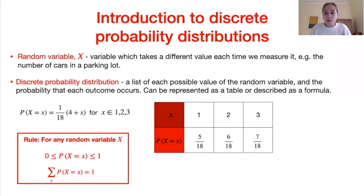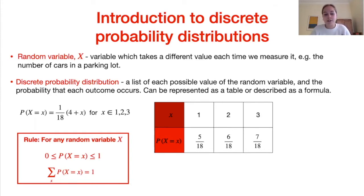There are a couple of rules which must always be true for all discrete probability distributions. The probability of our random variable being equal to any of its possible values has to lie between 0 and 1 — a probability of 0 means it will never occur and a probability of 1 means it will always occur. Also, the sum of all the probabilities over all possible values of the random variable must equal 1.